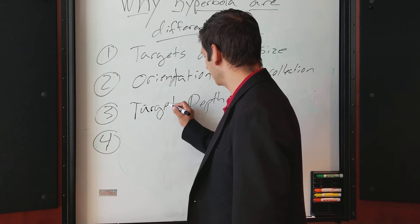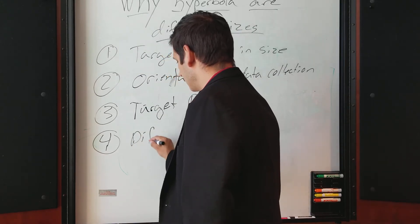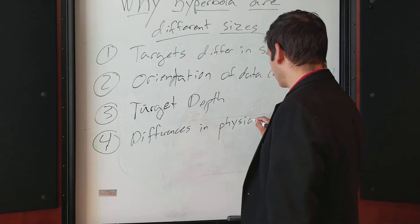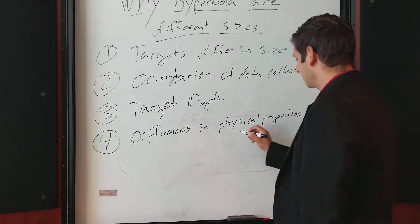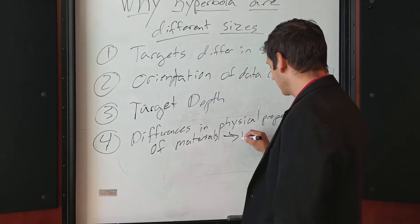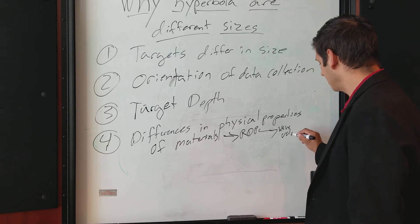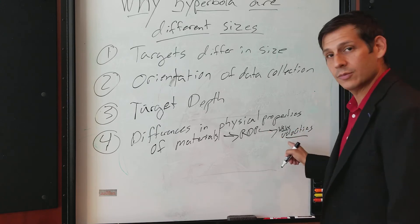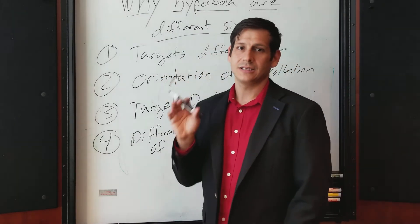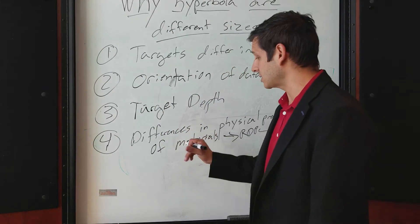Reason number four is differences in physical properties of materials — specifically differences in relative dielectric permittivity, and ultimately differences in wave velocities. Differences in wave velocities will create different hyperbola sizes for the same exact target: same size, same shape, same depth, but buried in two different material conditions.